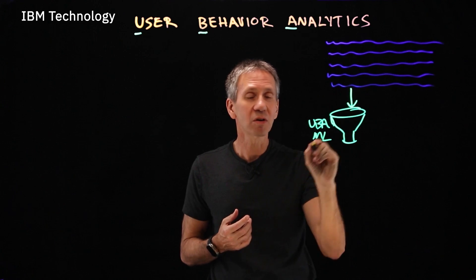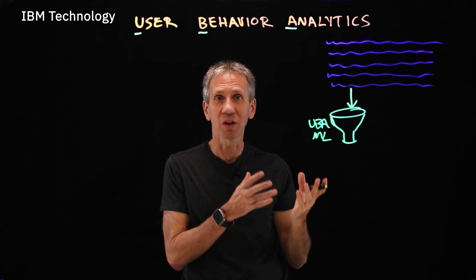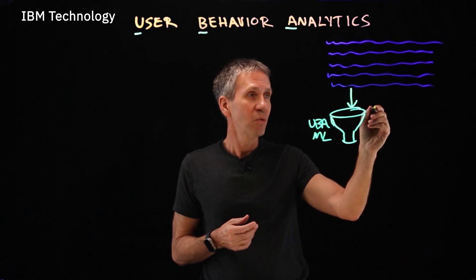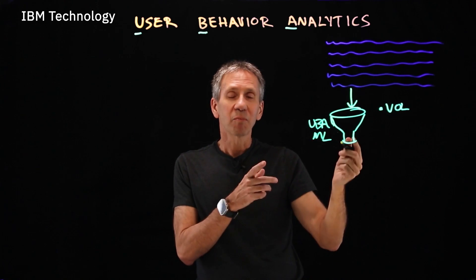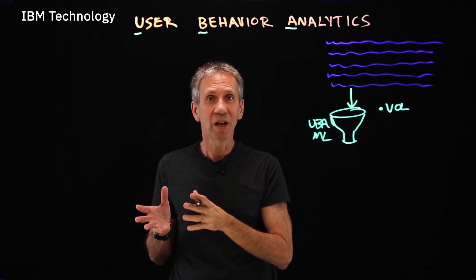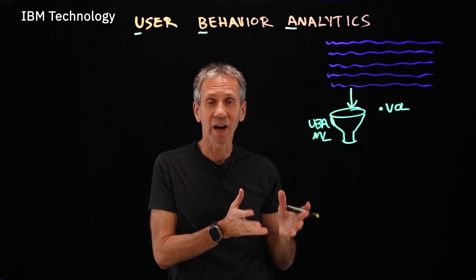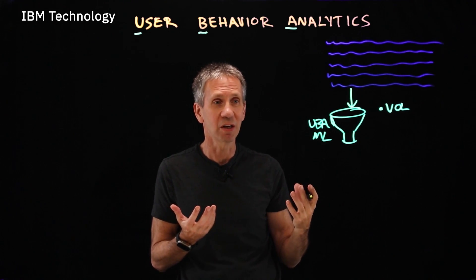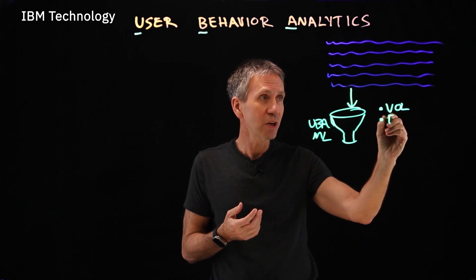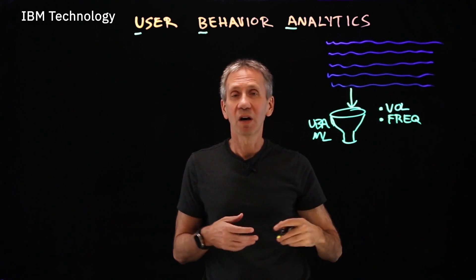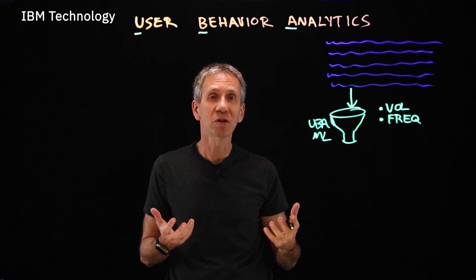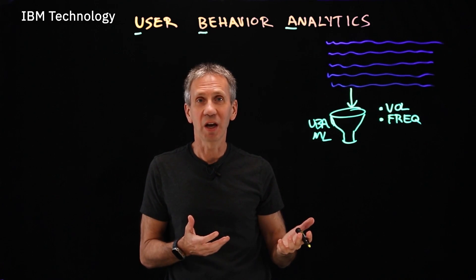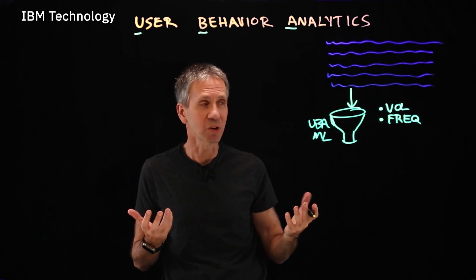User behavior analytics uses machine learning techniques to look for patterns and anomalies. What kinds of things does it use to make that determination? It's looking at things like volume — a particular user maybe was downloading 50 records a day and then suddenly starts downloading 50,000 records a day. That would be a deviation from the norm and might be a suspicious activity. Another thing could be related to frequency — they used to log into a system two or three times a day and then suddenly start logging in 50 times a day. That would possibly signal that something weird is going on.